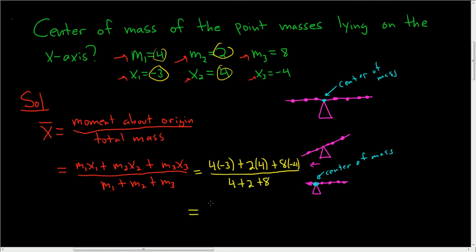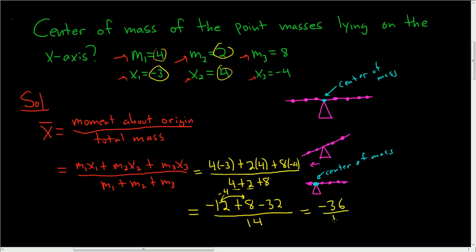So I'm going to try to be really careful. Let's see: 4 times negative 3 is negative 12, 2 times 4 is 8, and then 8 times negative 4 is negative 32. 4 plus 2 plus 8 is 14. Negative 12 plus 8 is negative 4, and we're going to have negative 4 minus 32, so we're going to get negative 36 over 14. And this is approximately equal to negative 2.57. So that's the point on the little seesaw at which we can relocate the fulcrum so that the system is balanced — in other words, it's at equilibrium.